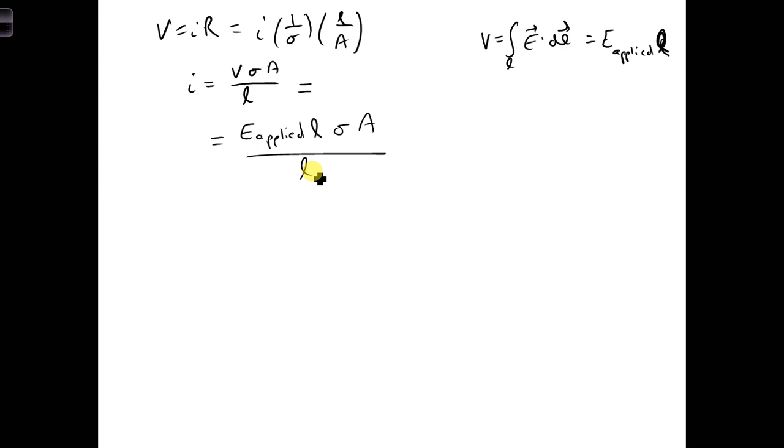And next, we can relate the current on the left side to the current density. So now I can write I is S integral of J dot N hat dS. And if we assume the current density is uniform over the cross-sectional area of the slab, which we can do, especially if the plates are very wide compared to the distance between the plates, and we neglect fringing fields and so forth.